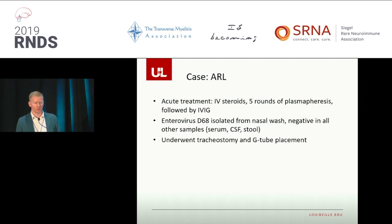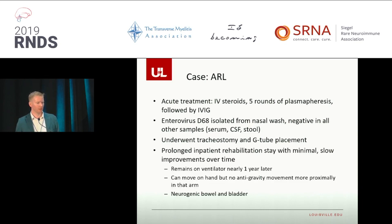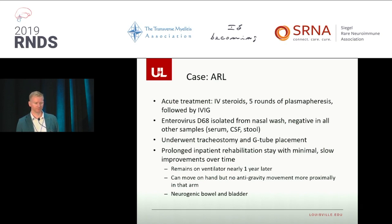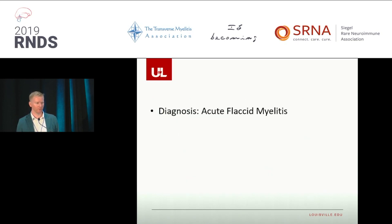He was treated with steroids, plasmapheresis, and IVIG — we threw everything we had at him in terms of acute treatments. He ultimately required a tracheostomy and a G-tube, was on a ventilator, and couldn't eat by mouth because he was aspirating. He required a very long stay in the rehab hospital. Now a year out from when I first saw him, he has a little bit of movement in one arm — just enough to pick up a phone and play games — and some trunk control. He still has neurogenic bowel and bladder and remains fully dependent on his parents for his care. This is a case of acute flaccid myelitis, something we knew very little about before 2014.